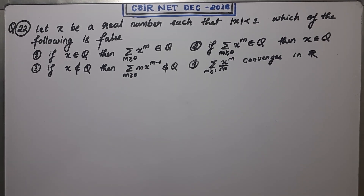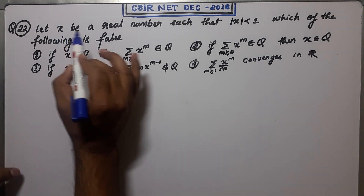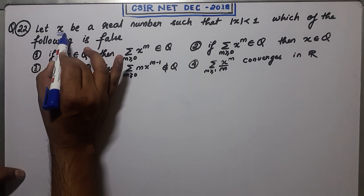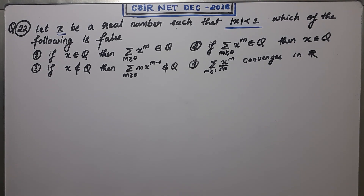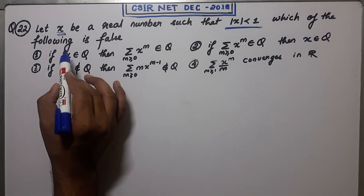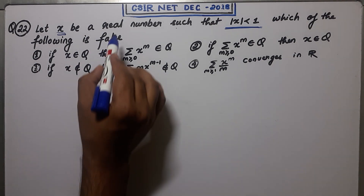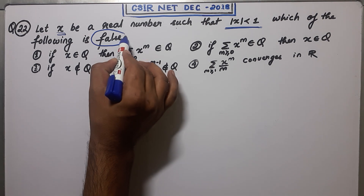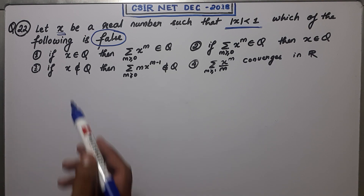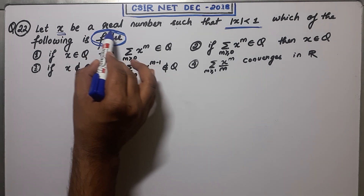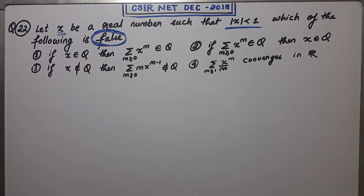Welcome guys, this is the 22nd question of NET December 2018. It's a question from Part B of the question paper. Let x be a real number such that |x| < 1, meaning the absolute value of x is less than 1. We have to find out which of the following is FALSE. It's very important to notice they are asking for the false option, so highlight it — you must pick the false one, not the correct one.